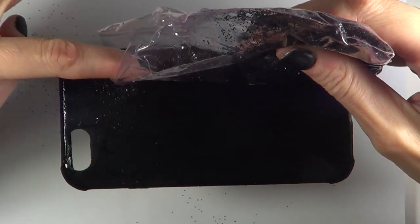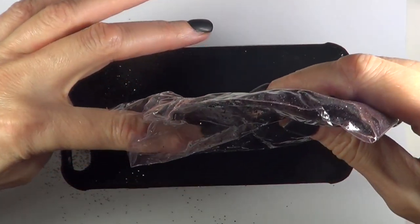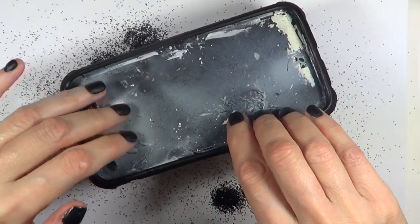But before it dries though, I'm going to be taking some black glitter and I'm just going to add it on the edges. Once it's done and dried, I'm going to be removing the excess glitter.